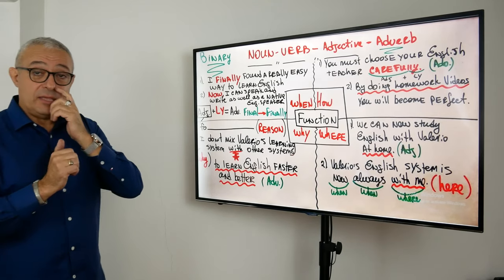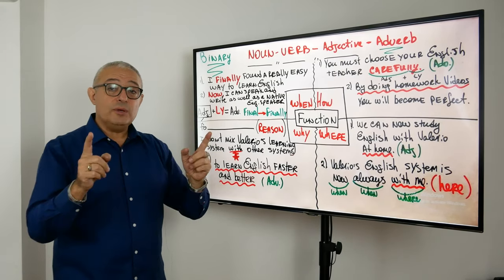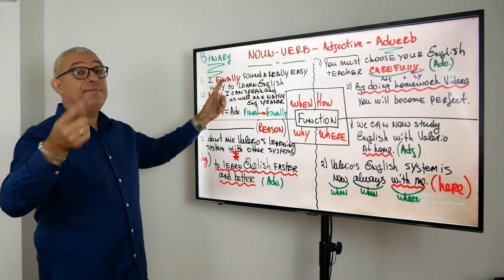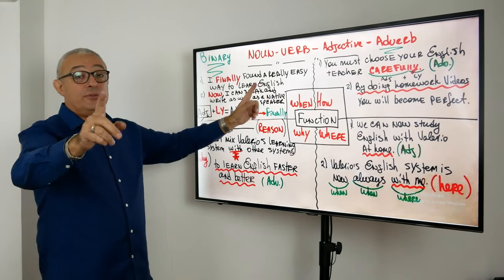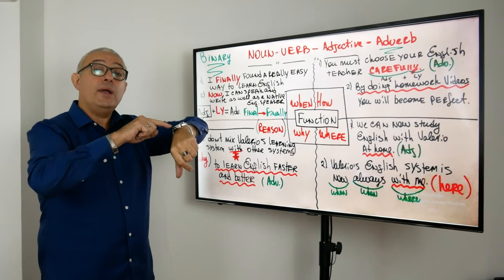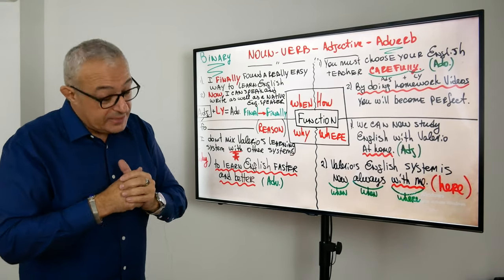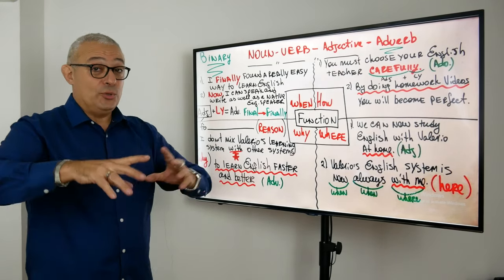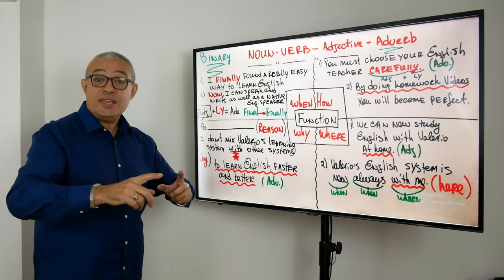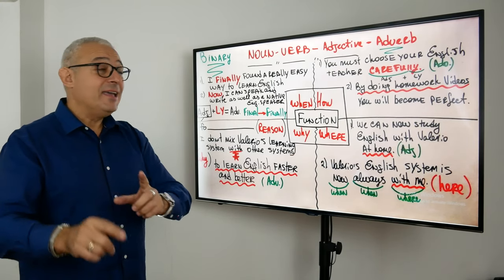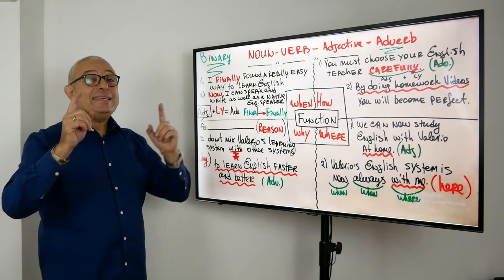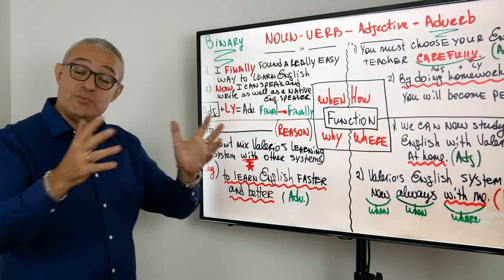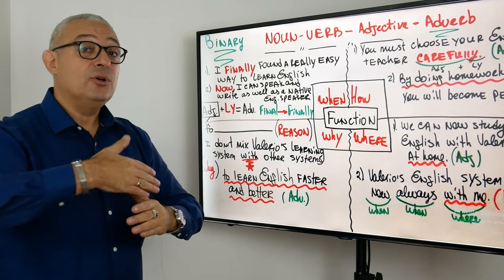I always tell my students that if you want to speak English well, you must always give a time reference. So if I say that I finally found a really easy way to learn English — when did you find that easy way? When you found EnglishClubUSA on YouTube or on the website — that's when you found a really easy way to learn English. That was your final step. You found it at the end of the search.